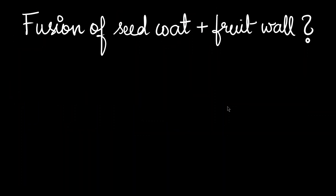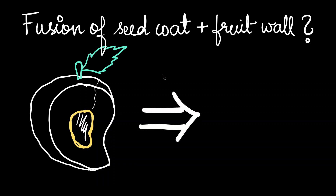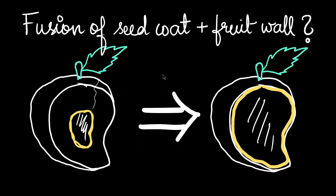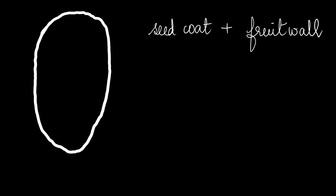So how would the fusion of seed coat and fruit wall look on a fleshy fruit? Consider a mango: it has its seed surrounded by a seed coat, and this is the fruit wall with its three different layers present in a fleshy fruit. Now if there is fusion of seed coat and fruit wall, this is what a mango would look like — most of the space inside would be occupied by the seed with a very thin layer of fruit on the outside. So our grains are basically this, with a fused seed coat and fruit wall.